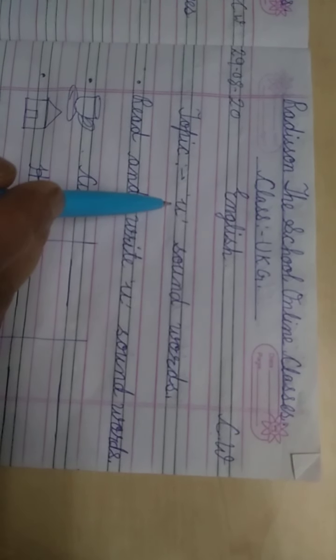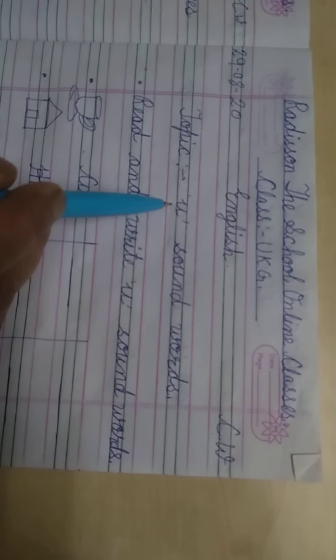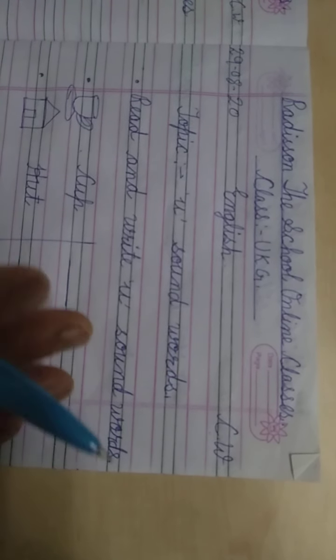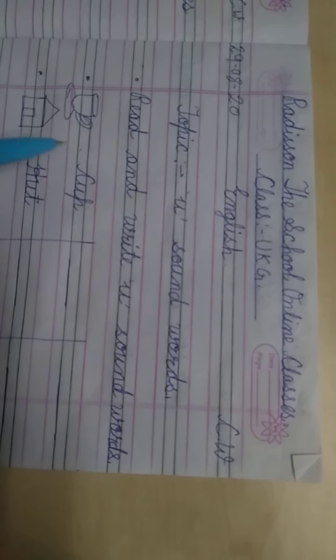Today's topic is U Sound Word. U is what we call a vowel consonant. This is a vowel. A, E, I sound word is complete. Next is U.